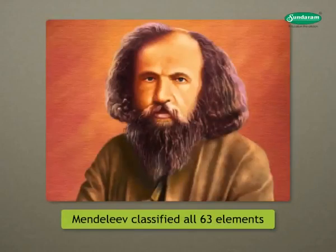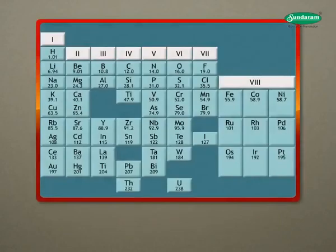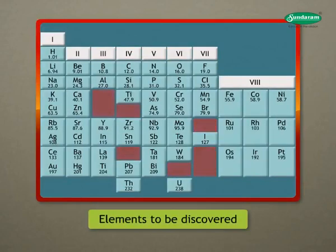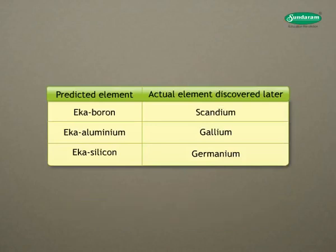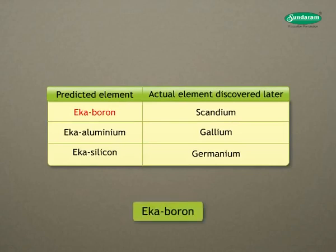Let us take a look at the merits of Mendeleev's periodic table. Mendeleev was the first who successfully classified all known elements. Mendeleev's periodic table had some blank places in it. These vacant spaces were for elements that were yet to be discovered. He also predicted the properties of these elements even before they were discovered. He had predicted the discovery of three elements named eka-boron, eka-aluminium, and eka-silicon.